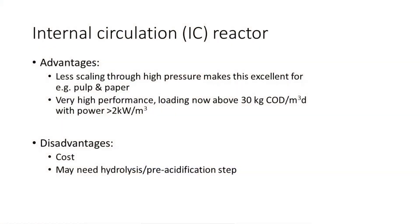The internal circulation reactor is a tall, self-mixed, intensive reactor with specific advantages. Because it's tall — 20 to 30 meters — the high pressure limits scaling: calcium carbonates are kept more in solution. So if you have a pulp and paper wastewater, you have fewer issues with scaling. You get a very high performance: conversions over 30 kilograms of organics per cubic meter per day, which is more than 2 kilowatts of power per cubic meter of reactor. That is a lot.